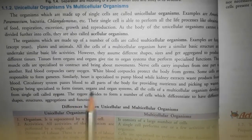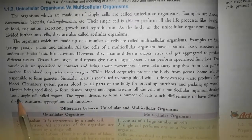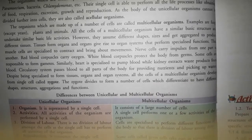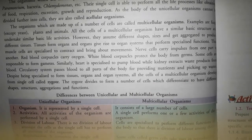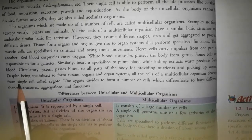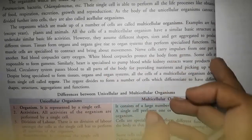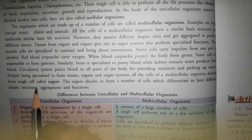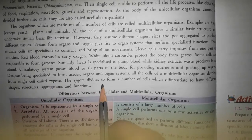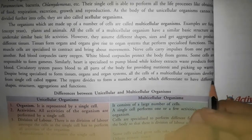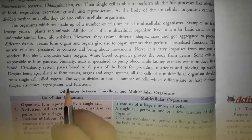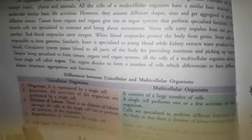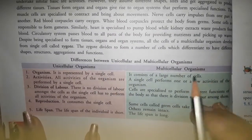Despite being specialized to form tissues, organs and organ systems, all the cells of a multicellular organism develop from a single cell. एक cell थी जो divide होती गई, अलग-अलग और cells बनती गईं, further divide होती रहीं. इस single cell जिससे ये मिलकर बनी है उसे zygote कहते हैं. Zygote बहुत सारी cells में divide होता है जो differentiate होकर अलग-अलग structures बन जाती हैं, इनकी shape अलग हो जाती है और functions भी अलग-अलग होते हैं.